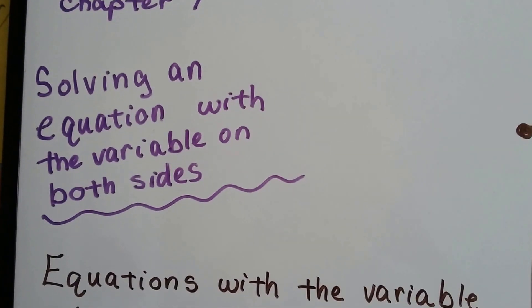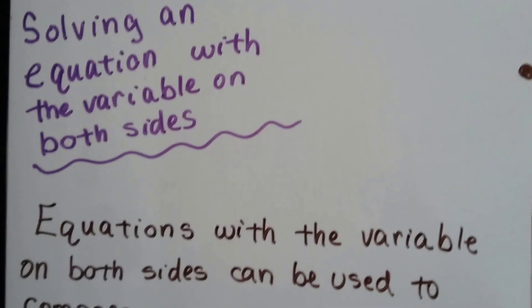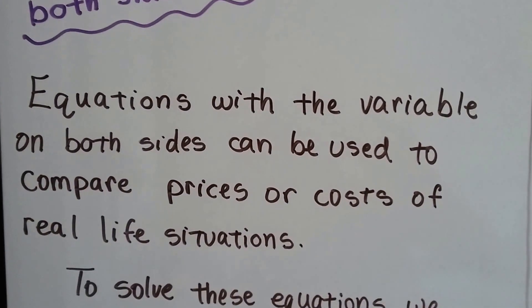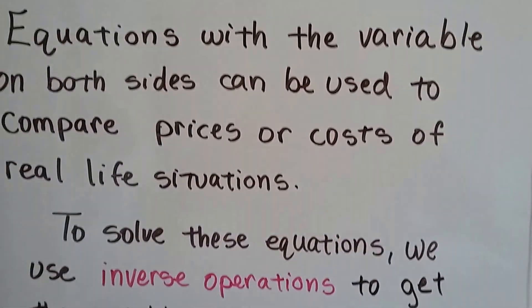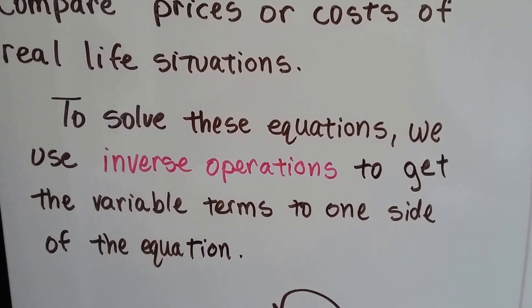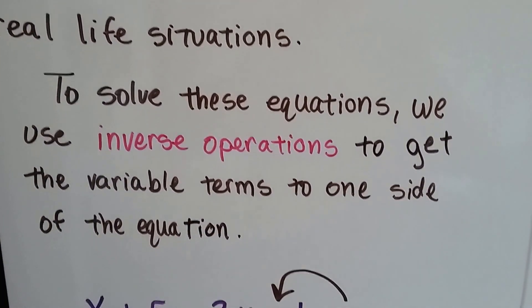Solving an equation with a variable on both sides. So it's the same variable on both sides of the equation. Equations with a variable on both sides can be used to compare prices or costs of real-life situations. To solve these equations, we use the inverse operations to get the variable terms to one side of the equation.